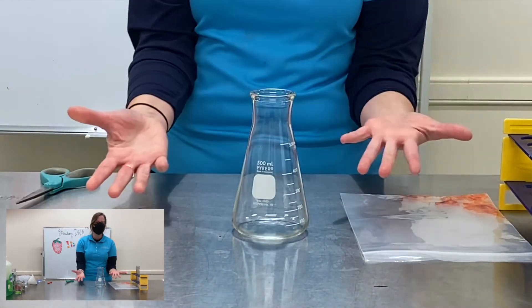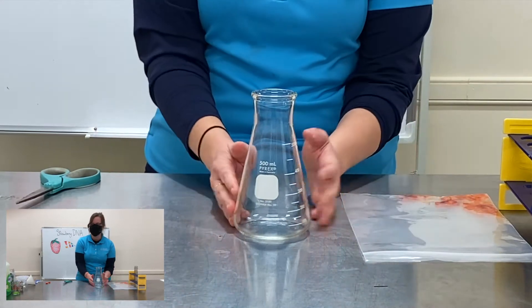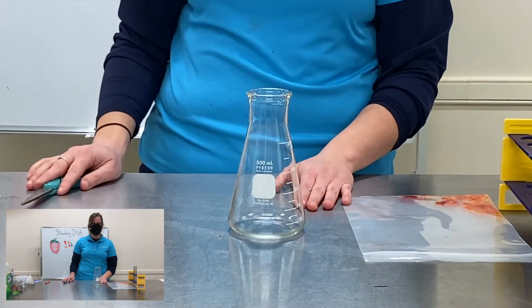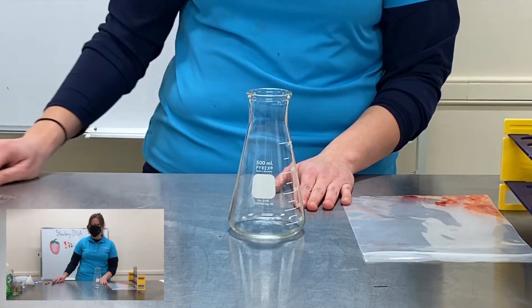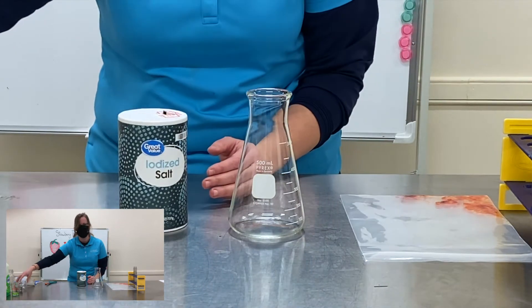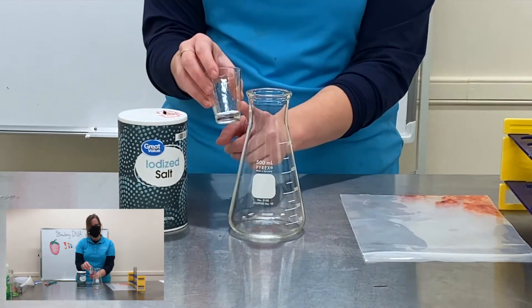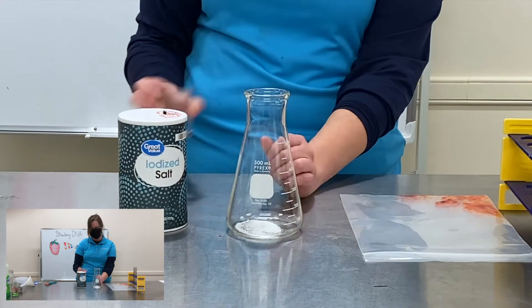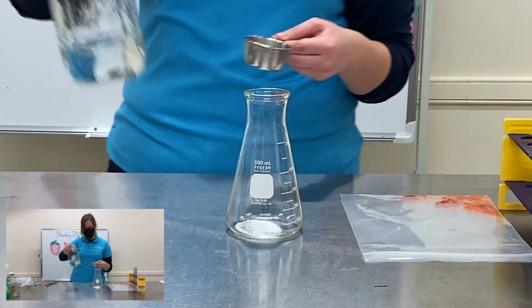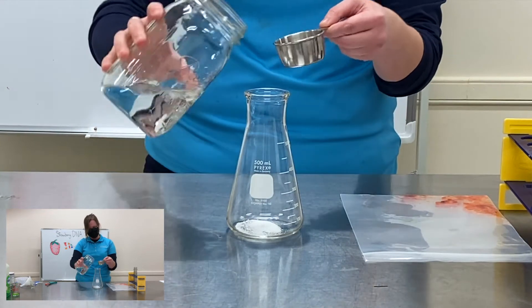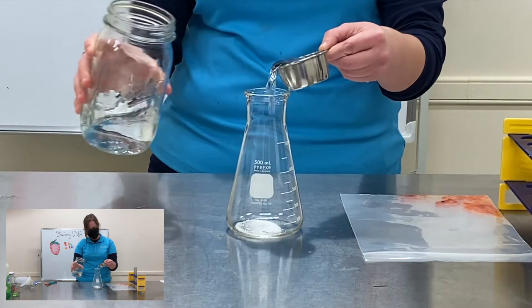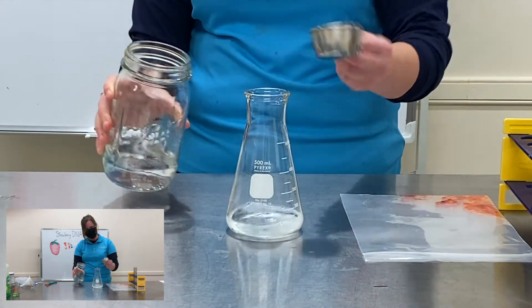I'm gonna take my flask but again if you just have a big empty glass or jar that will work too. And I'm gonna be adding in my water, my salt and my soap. So for my table salt I'm gonna add one teaspoon. I've already measured out my teaspoon of salt and I'm gonna pour it into my jar. For my water I need one third cup of water. So I'm gonna pour one third cup of water in and then pour it right into the same jar as my salt.